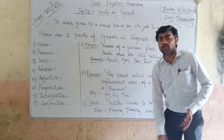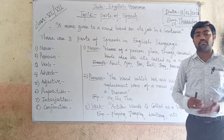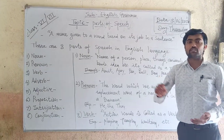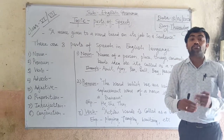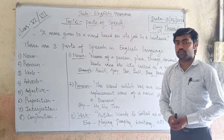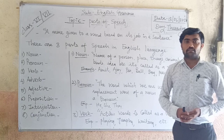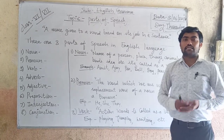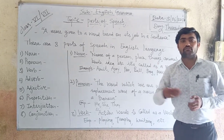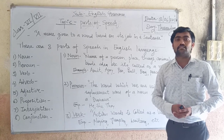Third is verb. In every sentence, a verb is most important — there should be an action. That action word is called a verb. For example: writing, playing, sleeping, jumping, clapping, crying. These are action words; they show the action in the sentence, so that action word is called a verb.